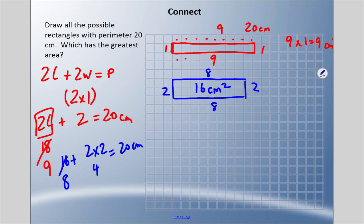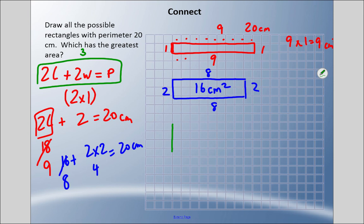Let's try a width of three. Two times three is six; twenty minus six is fourteen left to deal with. Fourteen divided by two is seven, so the length is seven. So we have a three by seven rectangle, and the area in the middle is twenty-one centimeters squared.